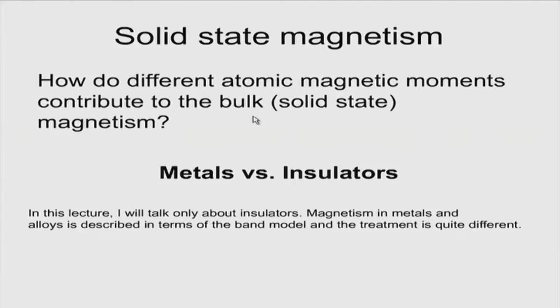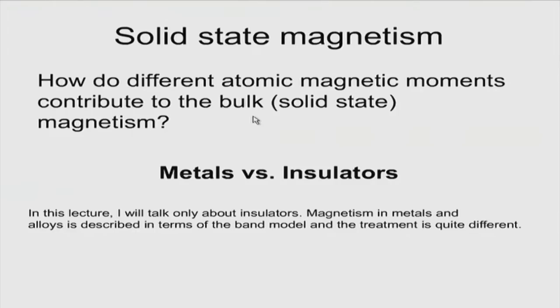Basically we are looking at solid state magnetism. Our journey started with the electronic part, built up an atom consisting of electrons, with contributions giving rise to atomic magnetic moment — Hund's rules giving you atomic magnetism. When we went to molecules, we saw molecular orbitals, bonding versus anti-bonding, filling, degeneracy, and Pauli's exclusion principle all determine whether the molecule is paramagnetic or diamagnetic. Now the next obvious thing is to see what happens in solid state bulk magnetism.